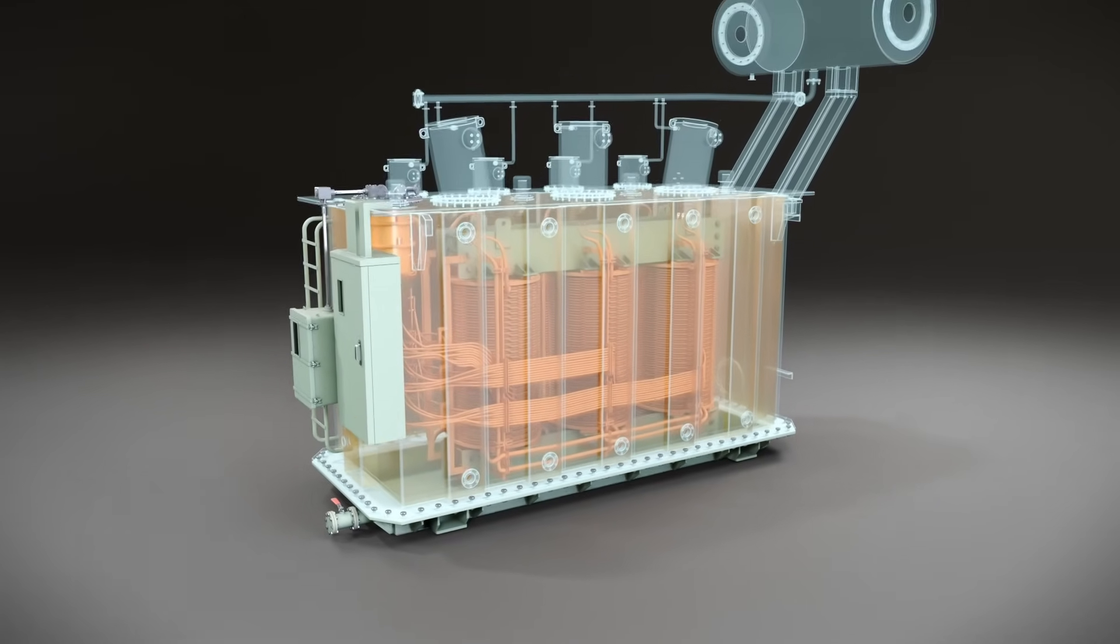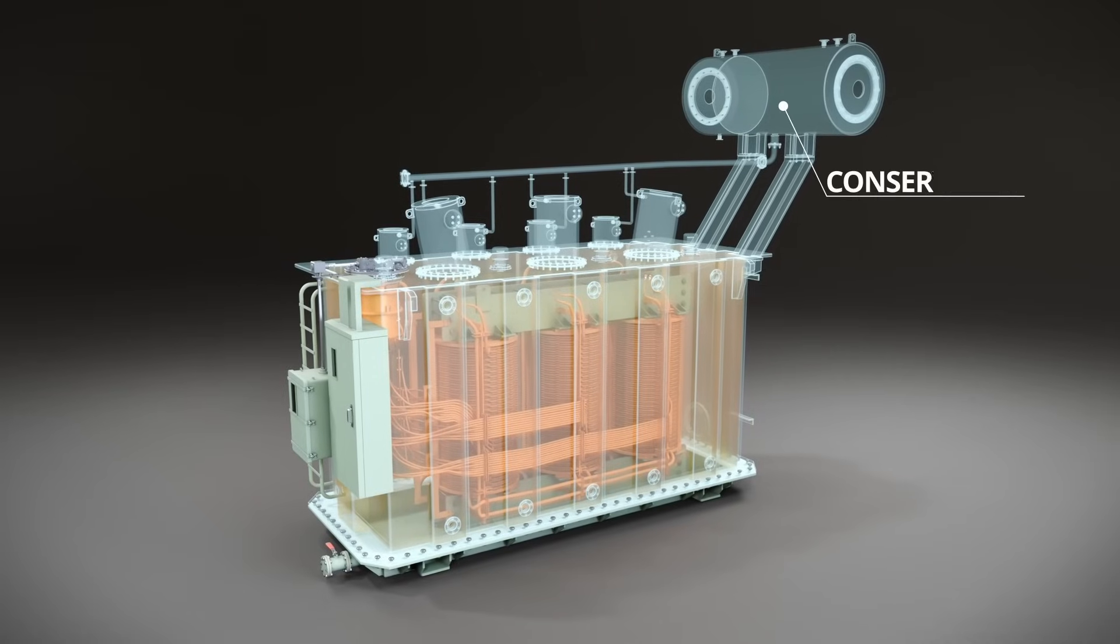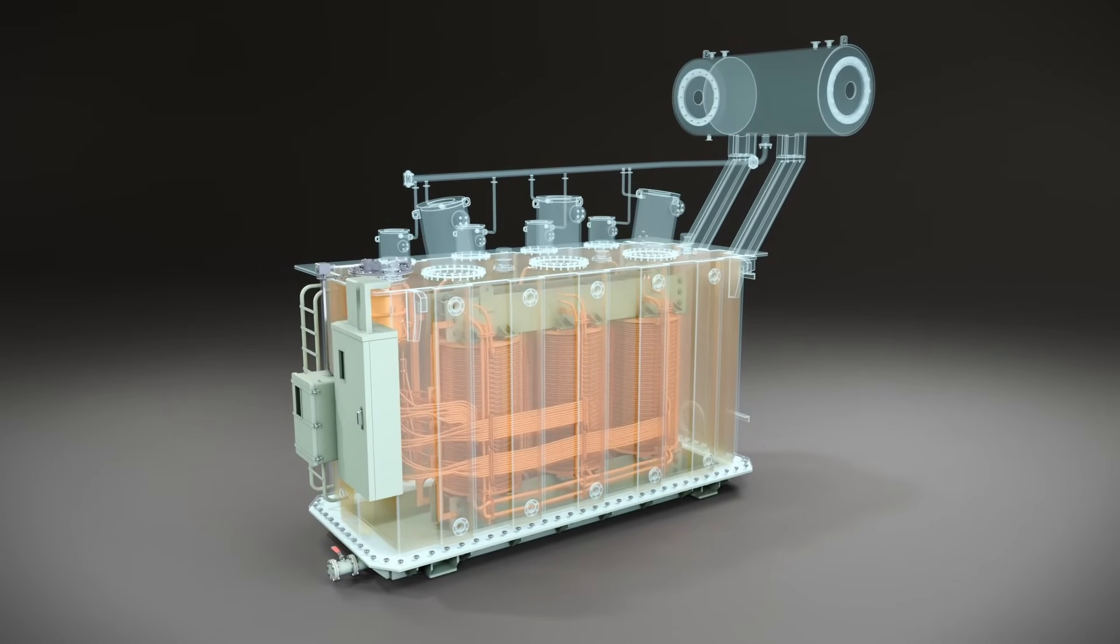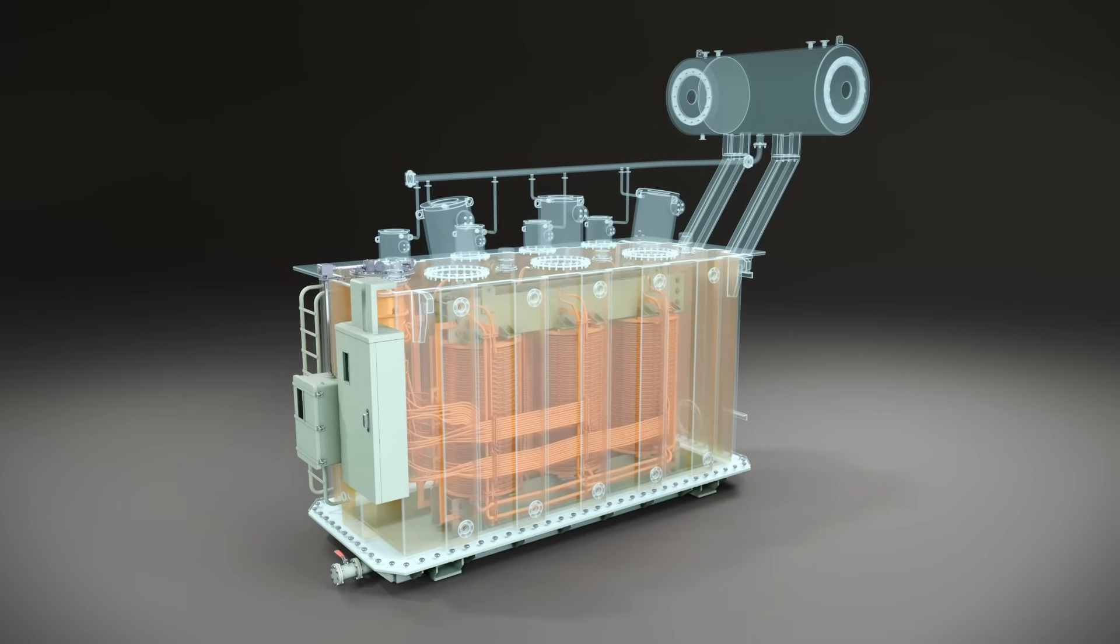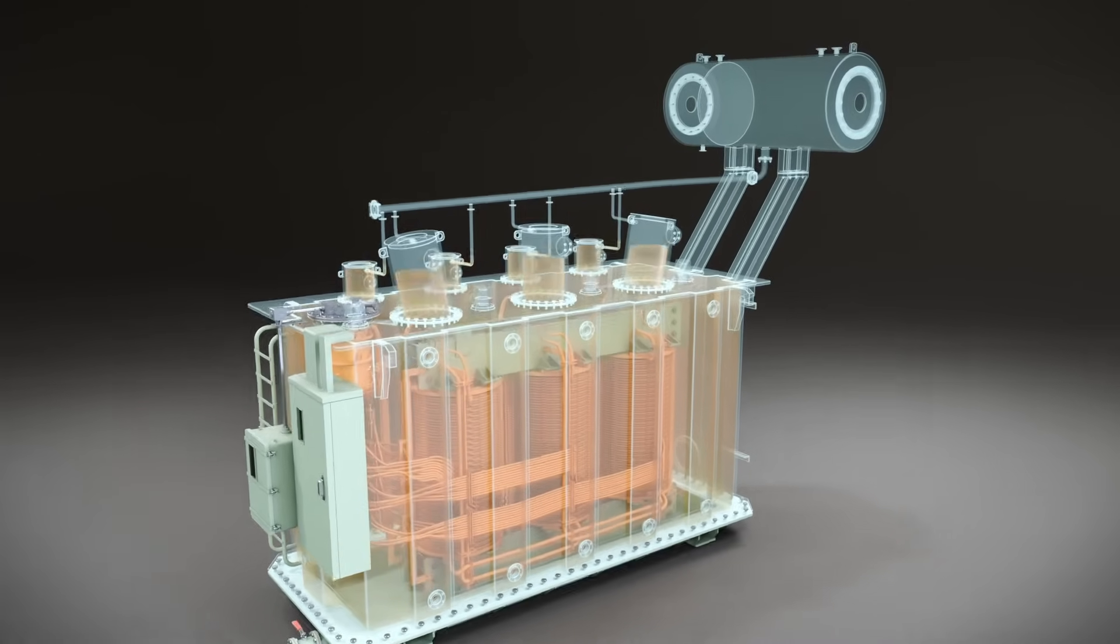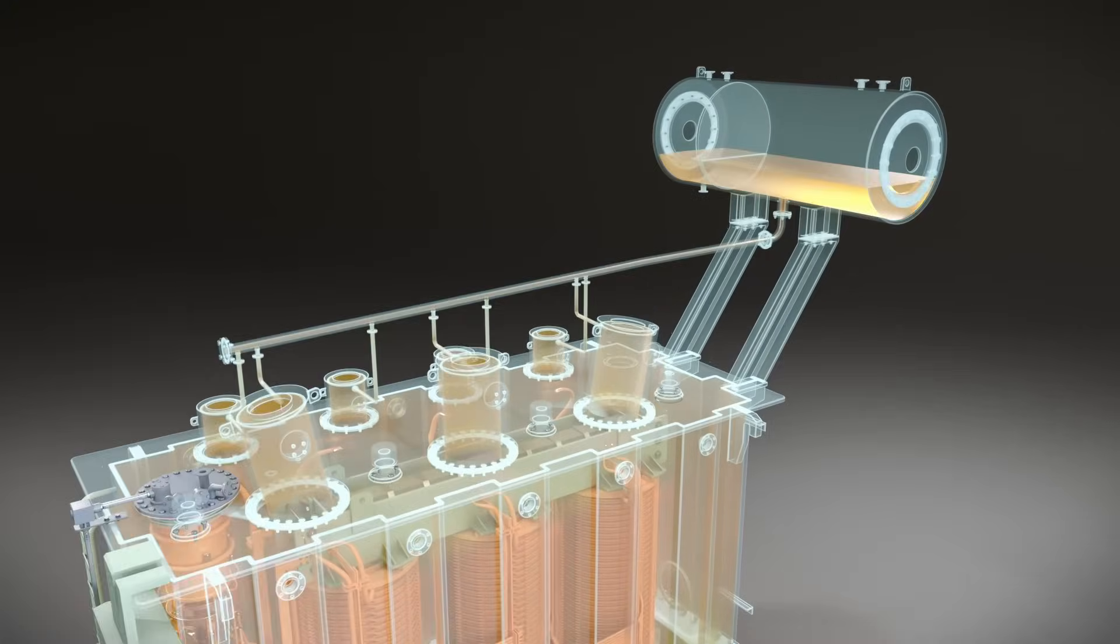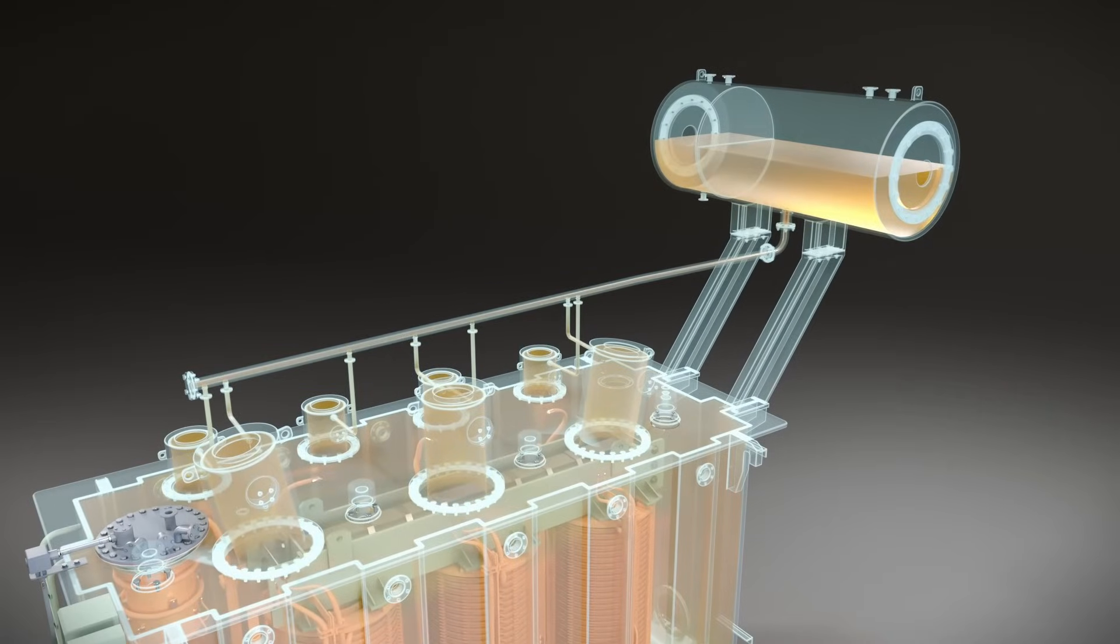Additionally, a smaller tank known as a conservator is connected to the main tank and placed at a level higher than the main tank. It is used to store excess oil, ensuring there is no shortage of oil in the main tank.